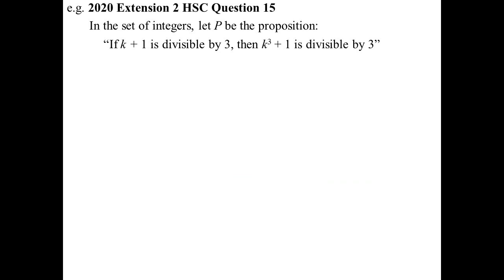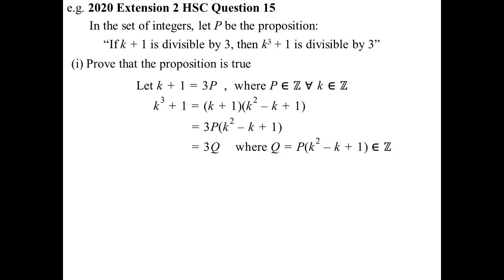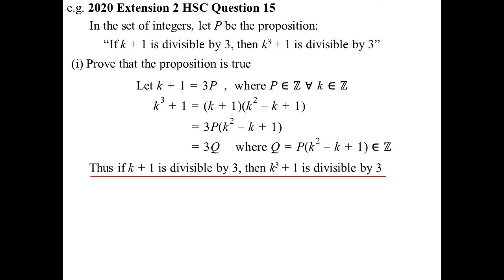2020 HSC — the first one of the new course. The proposition P: if K + 1 is divisible by 3, then K³ + 1 is also divisible by 3. Prove this is true. Let K + 1 = 3P for some integer P. We know the factorisation of K³ + 1. So I can write it as 3P times (K² − K + 1). Since K² − K + 1 must be an integer, it equals 3Q. So if K + 1 is divisible by 3, then K³ + 1 is divisible by 3.